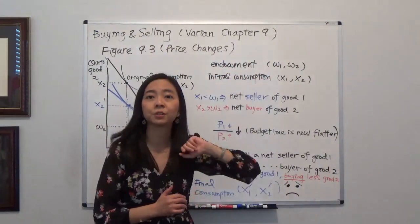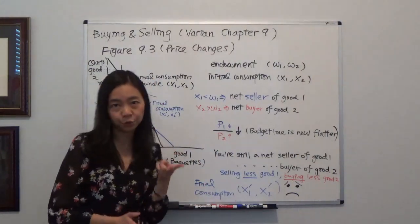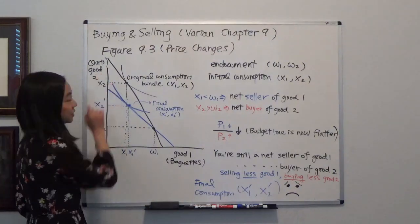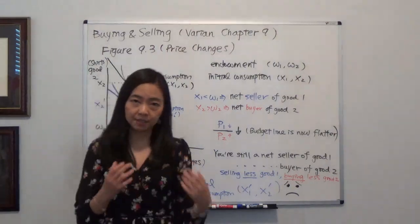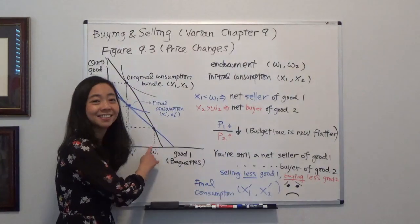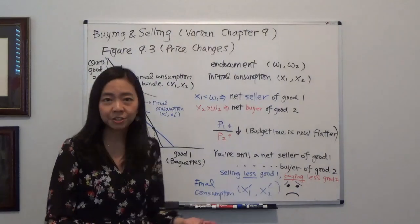I want you to imagine in this world we have two goods: baguettes, that's good one, and t-shirts, that's good two. For some reason, your initial endowment is a lot of baguettes and only a few t-shirts. And that's not ideal, of course.